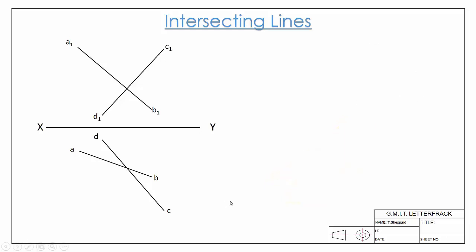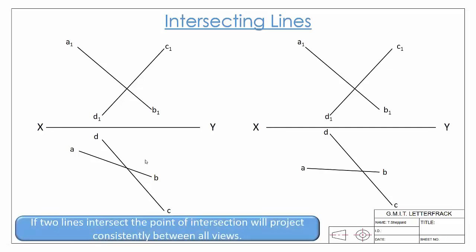How do we know if we're dealing with intersecting lines? If we take our two examples here, both appear to be crossing, but we can test whether they truly are crossing by a simple theorem: if two lines truly intersect, the point of intersection will project consistently between all views.